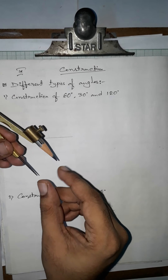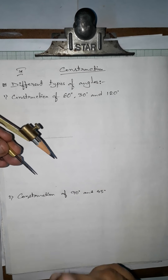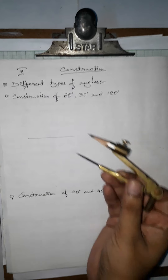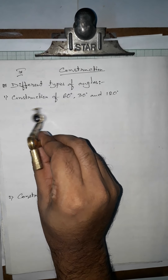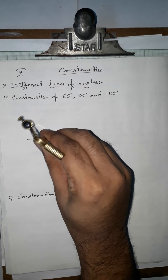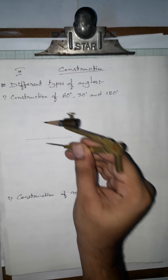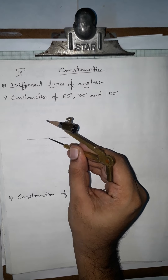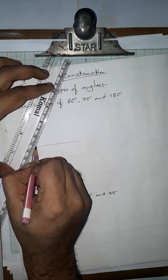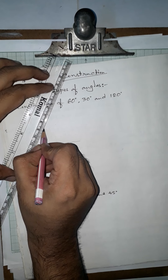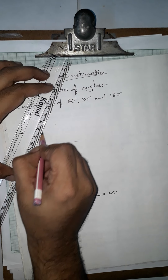Without changing the radius, from the intersection point we will give another arc on the previous arc. We now have a new point. If we join these two points — the vertex and the new point — we will have the 60-degree angle.